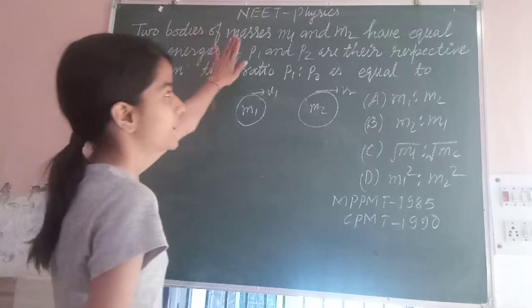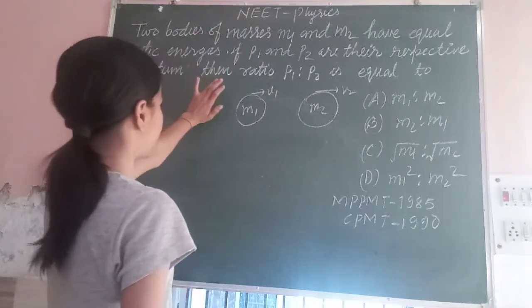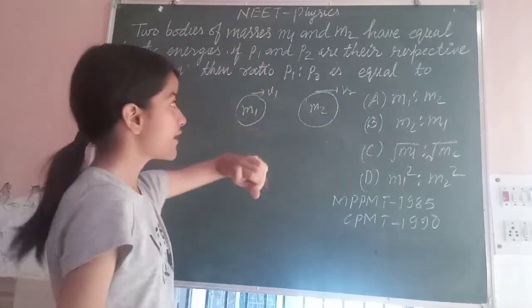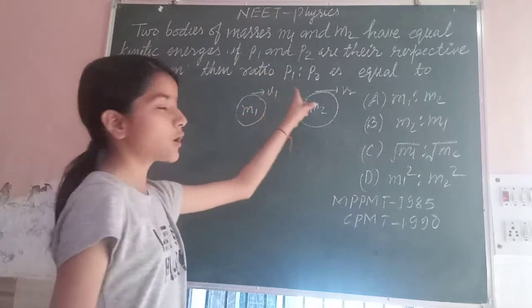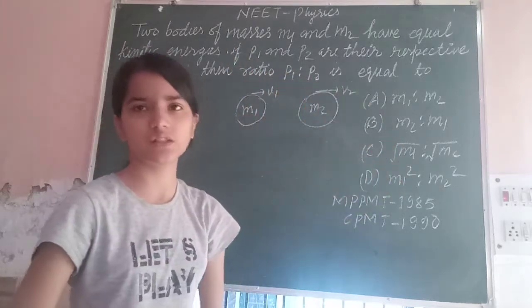Two bodies of masses M1 and M2 have equal kinetic energies. If P1 and P2 are their respective momentum, then ratio of P1 to P2 is equal to.